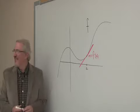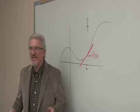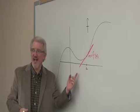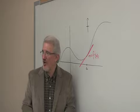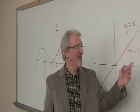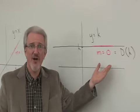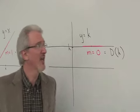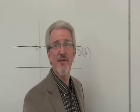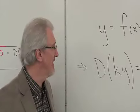Like this! Derivatives are slopes of tangent lines as we all know. So d of x is 1 and d of k must be 0. The constant times a function rule is coming up next.